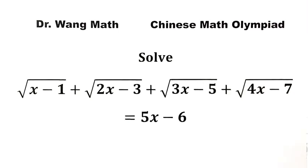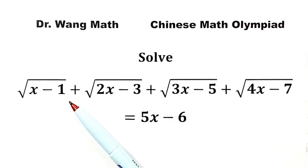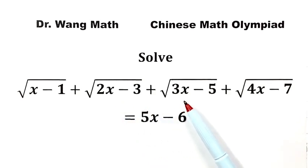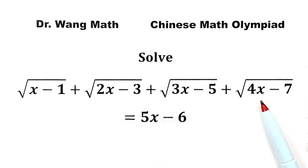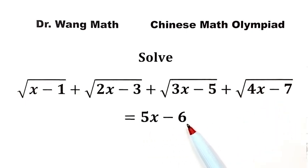In this video, we'll be solving a question from the Chinese Math Olympiad. Solve the equation: square root of (x minus 1) plus square root of (2x minus 3) plus square root of (3x minus 5) plus square root of (4x minus 7) equals 5x minus 6.